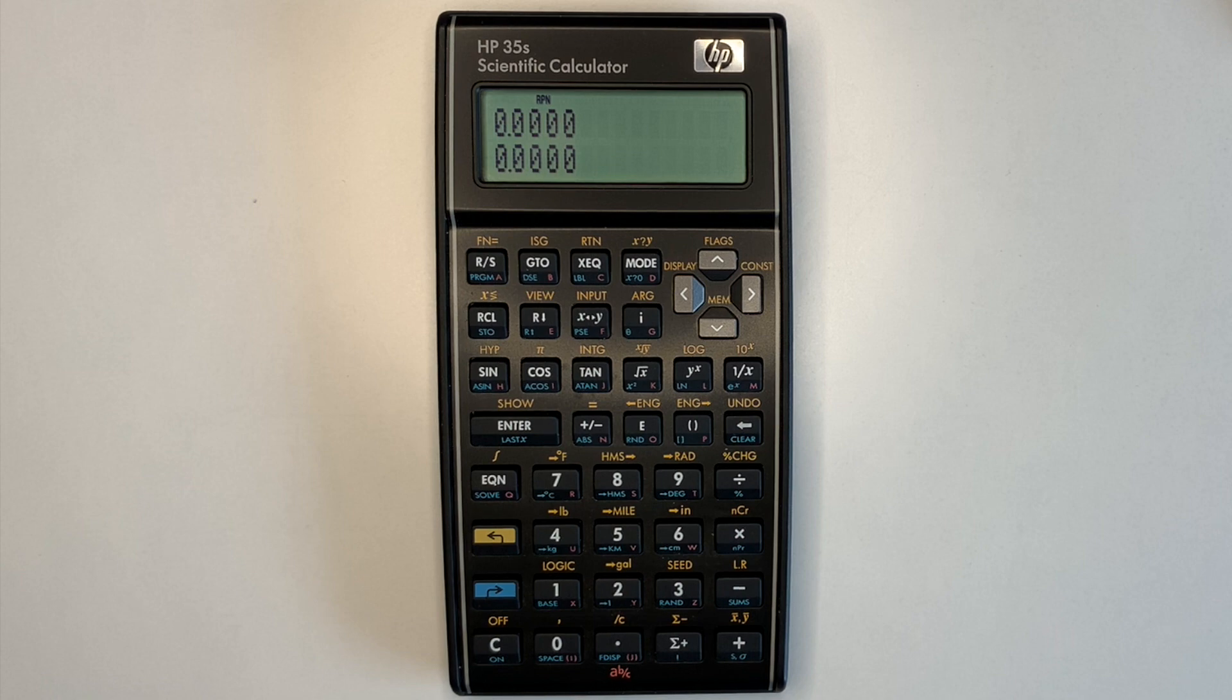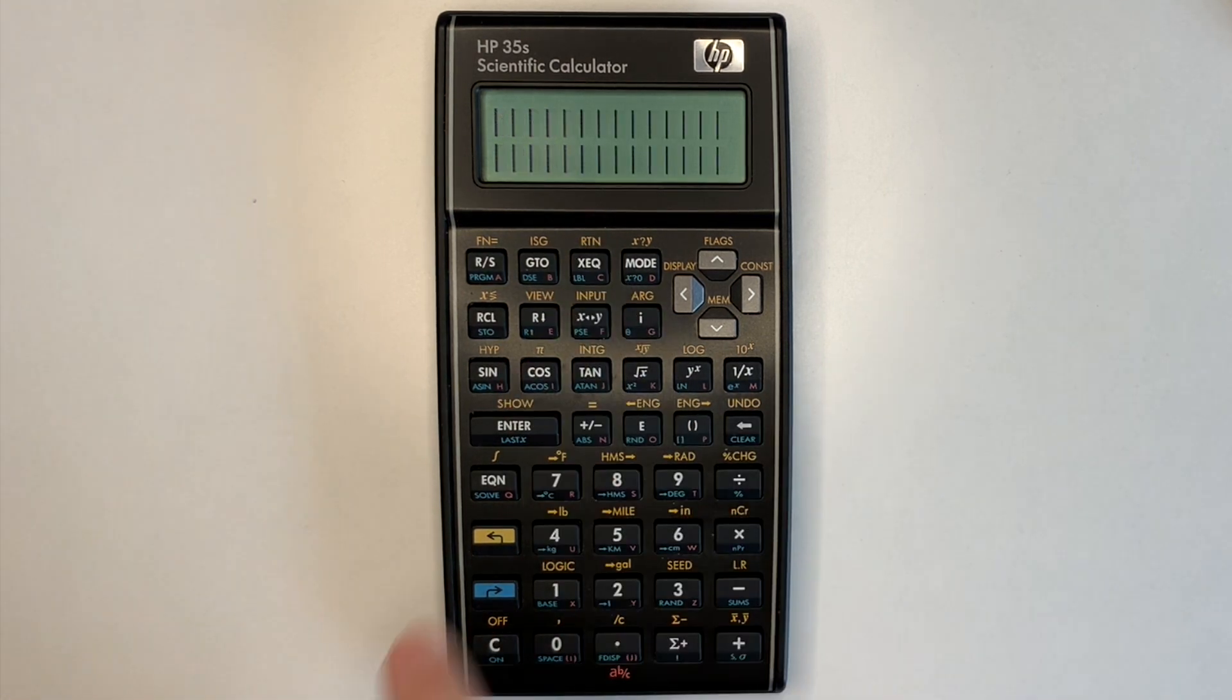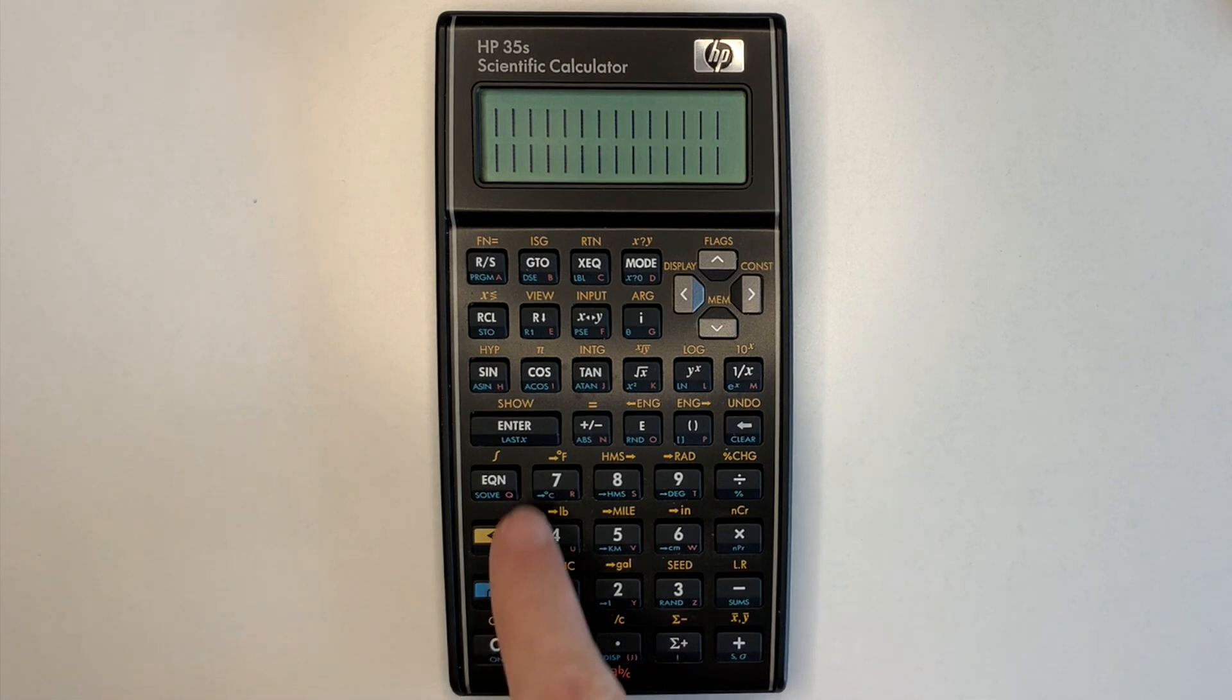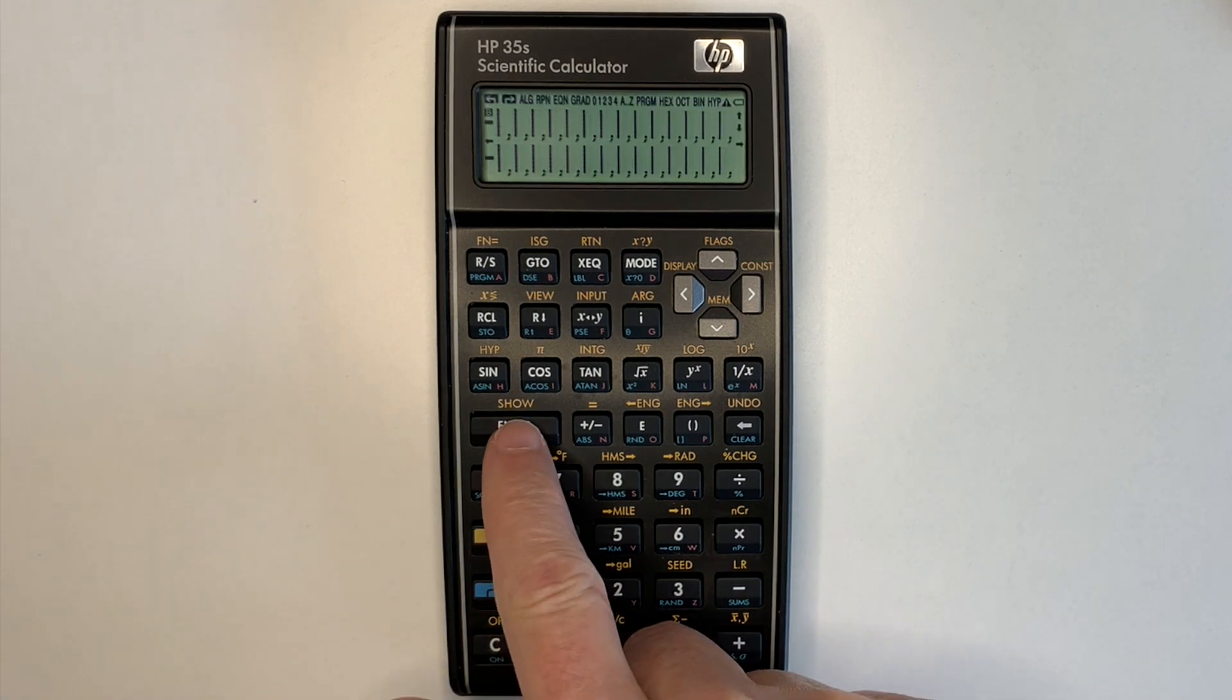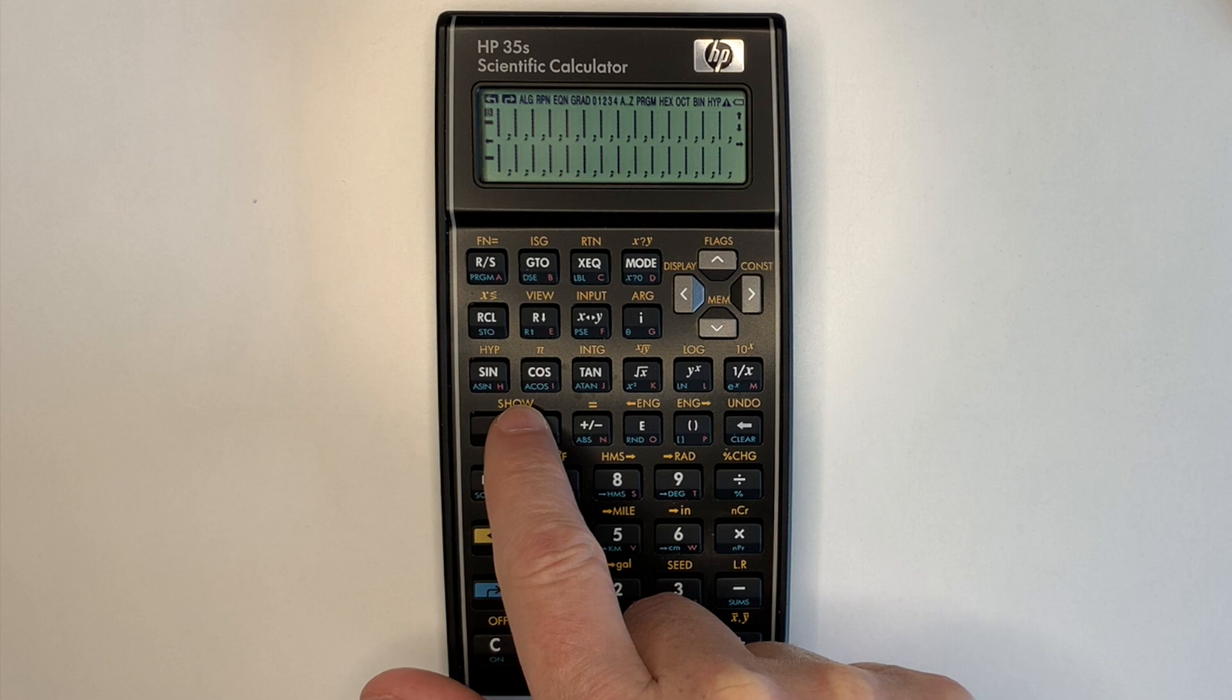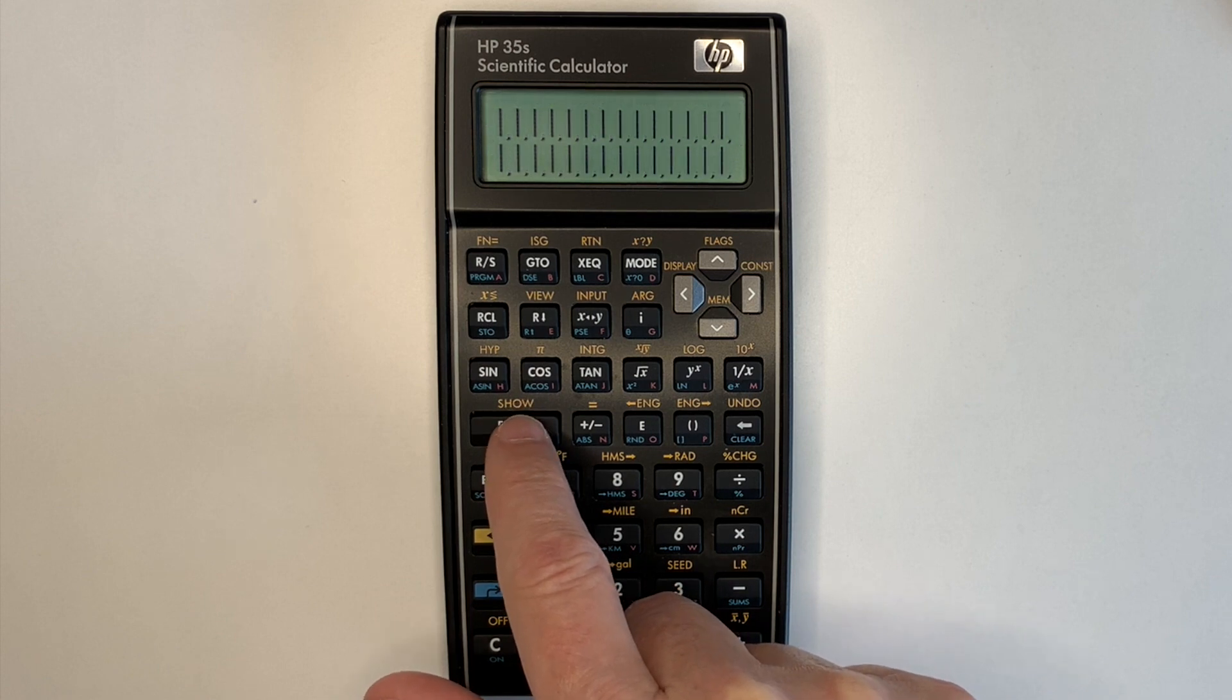To access the test, hold down C and press execute. Display test comes up first where all the segments and enunciators are lit.